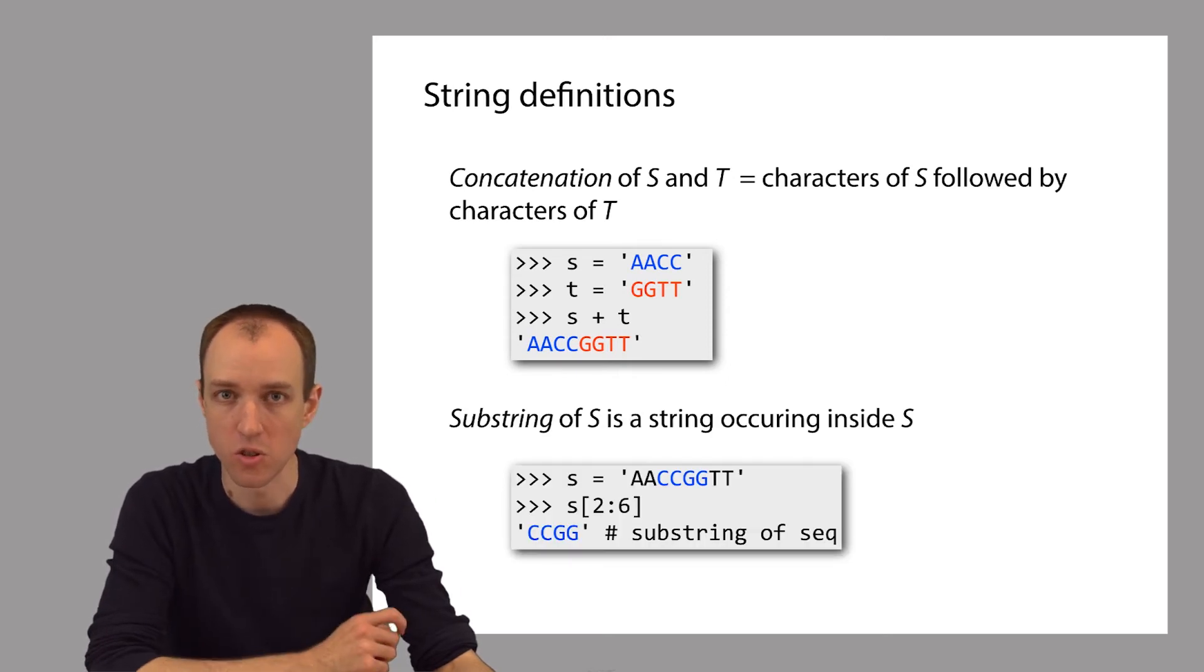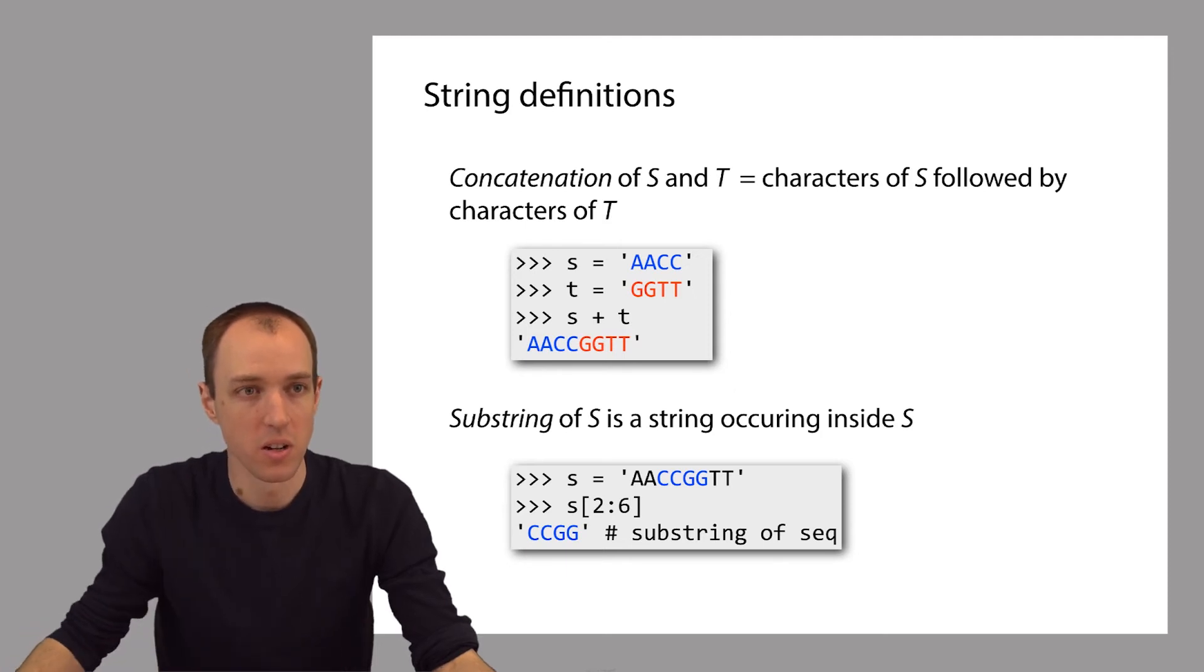A substring is just a shorter string that occurs within a longer string. For example, here we have a longer string S. We use this bracket notation to get the substring of S that starts at offset 2 up to, but not including, offset 6. So it gets the length four substring starting at offset 2: C, C, G, G.